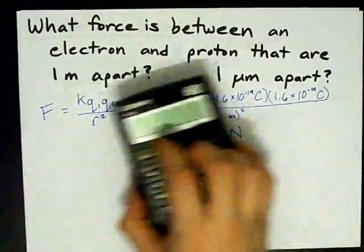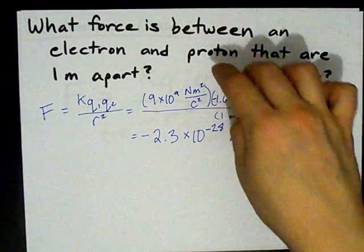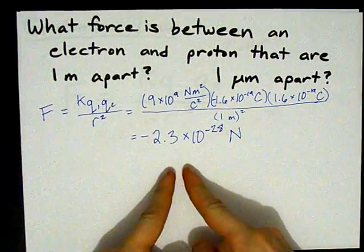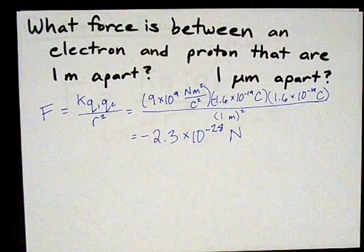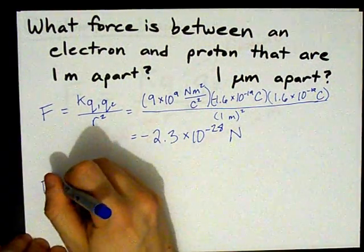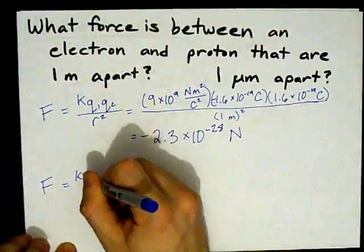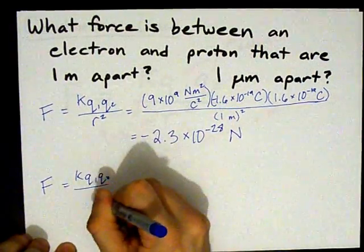But, what I would like to point out is that we're going to bring them closer. We're going to bring them so that they're only one micrometer apart. Let's do this again. We've got k, q1, q2, over r squared.